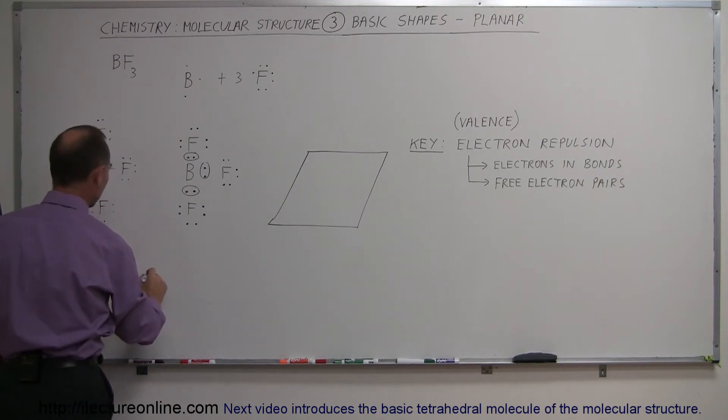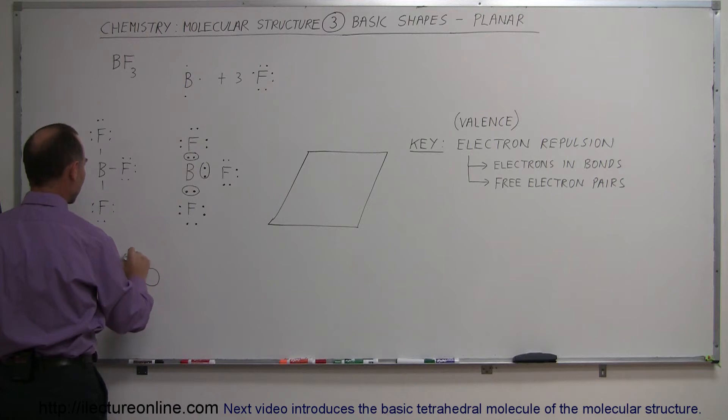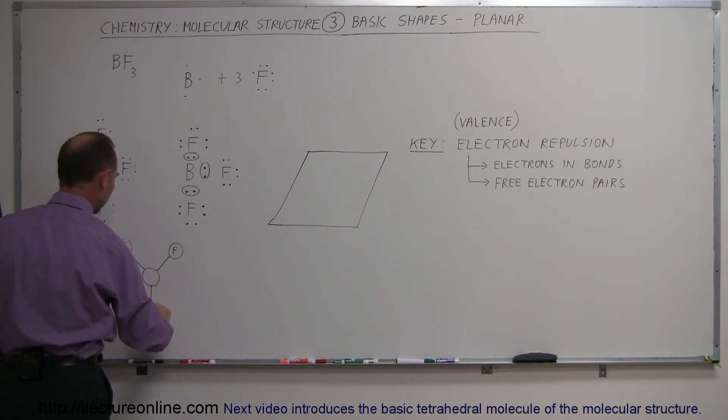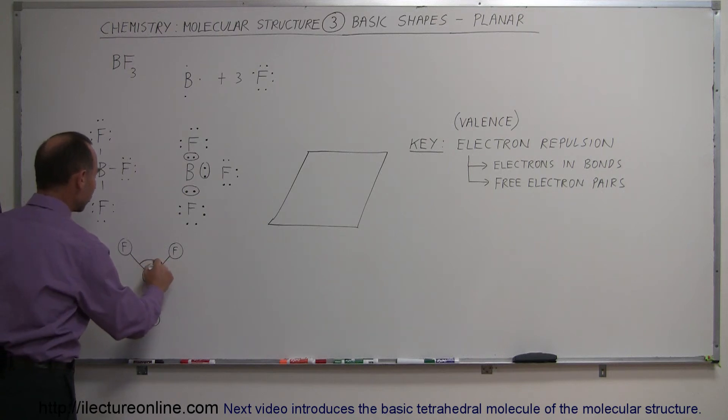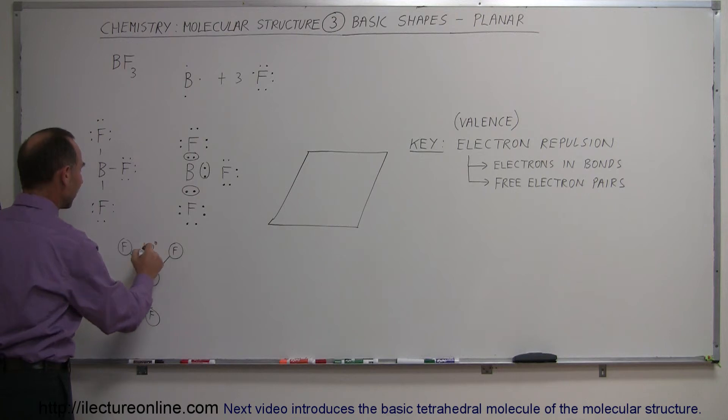So what you'll end up doing, you'll end up with a situation where you have your central atom which is boron and then the three fluorine atoms which bend away from one another in such a way that the angle between the bonds is as large as possible. And of course if they're in a planar shape, the largest angle you can have would be 120 degrees. So each of the angles between any two pairs of fluorines: 120 degrees. 120 degrees here, here and there.